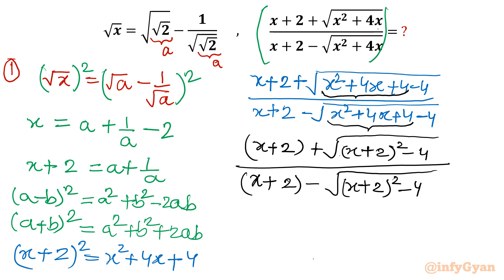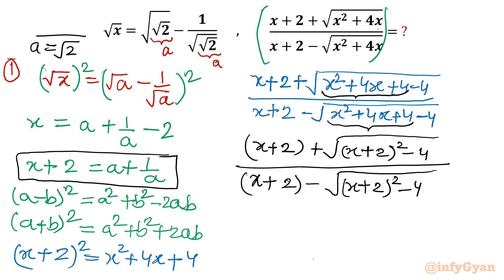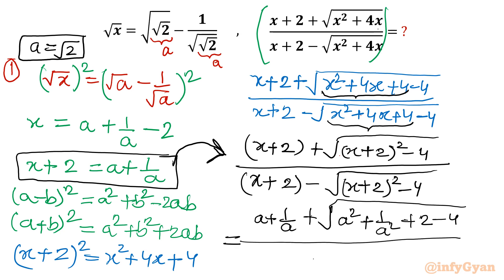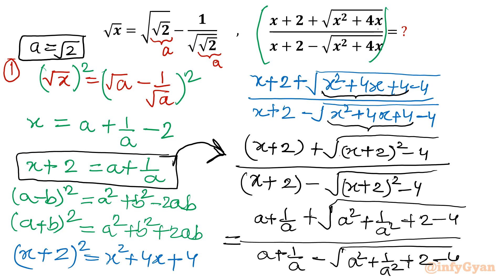Notice that x² + 4x + 4 = (x + 2)², so I can rewrite the expression as (x + 2 + √((x+2)² − 4)) / (x + 2 − √((x+2)² − 4)). Now x + 2 = a + 1/a, and (x + 2)² = a² + 1/a² + 2. I substitute that value into the expression, writing a + 1/a plus the square root of (a² + 1/a² + 2 − 4).